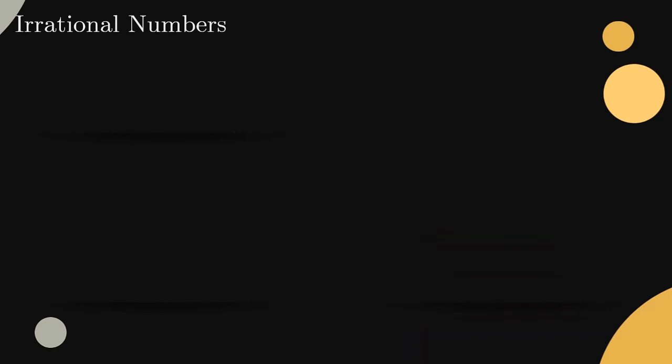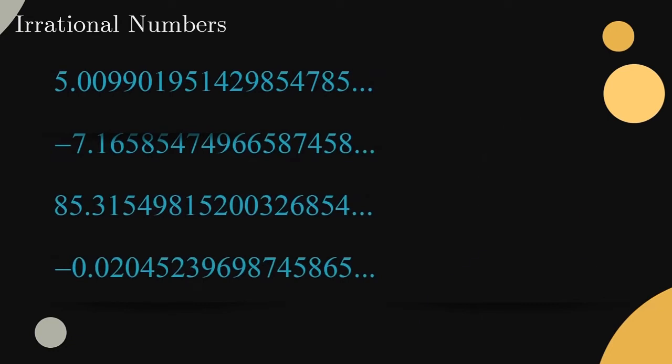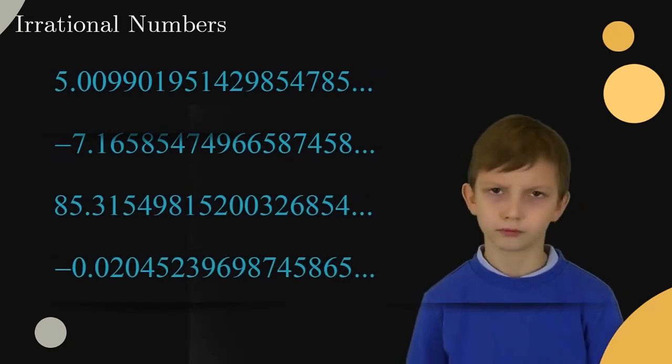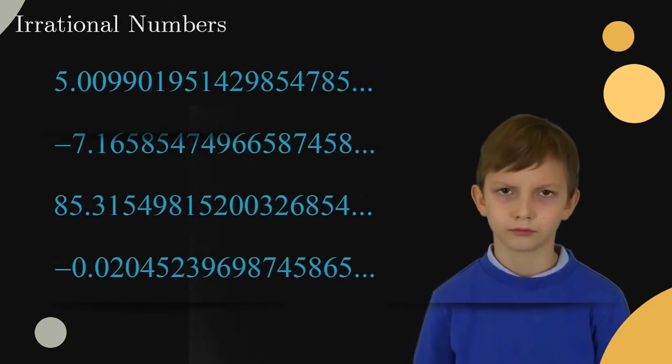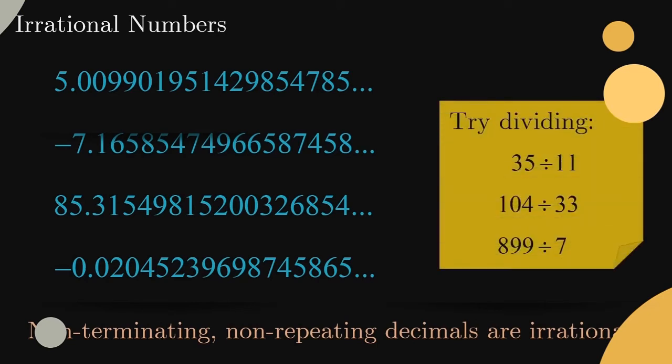First on the list, we have decimals that do not terminate and do not repeat. There's no way to write these messy creatures as an integer divided by an integer. To catch a glimpse of why, try carrying out some divisions of integers where the result is a non-terminating decimal. Whether you use the traditional long division algorithm or another approach, you'll quickly see that it's only a matter of time before the digits after the decimal point begin repeating.